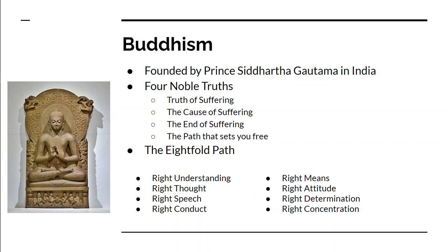He said there's the truth of suffering — that everybody suffers for some reason. There's a cause to that suffering. There's a way to end the suffering. And there's a path that will set you free from the suffering. This path is known as the Eightfold Path. You have to have the right understanding — understanding that you're suffering and there's a way to end it. You have to have the right thought — positive thoughts, believing that you can end your suffering.